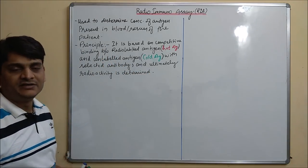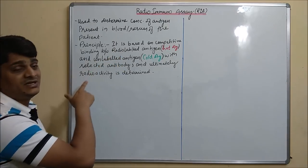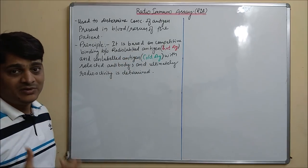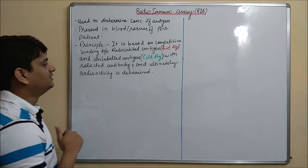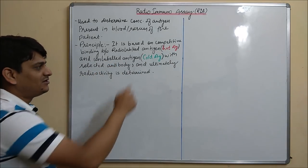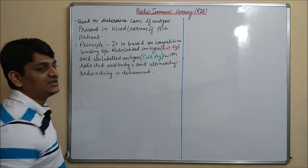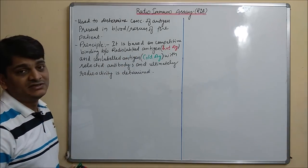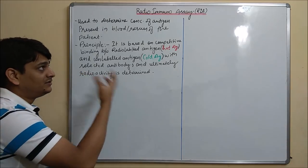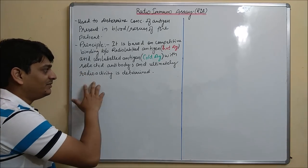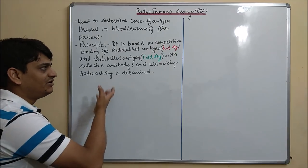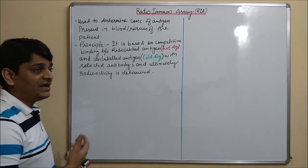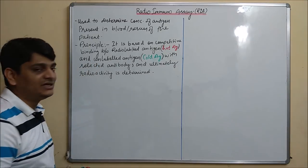The principle of radioimmunoassay is based on competitive binding between radiolabeled antigen, also known as hot antigen, and unlabeled antigen, also known as cold antigen, which comes from the serum of the patient, with a selected antibody. Ultimately, the radioactivity of this hot antigen is determined, and accordingly we can do qualitative as well as quantitative analysis.